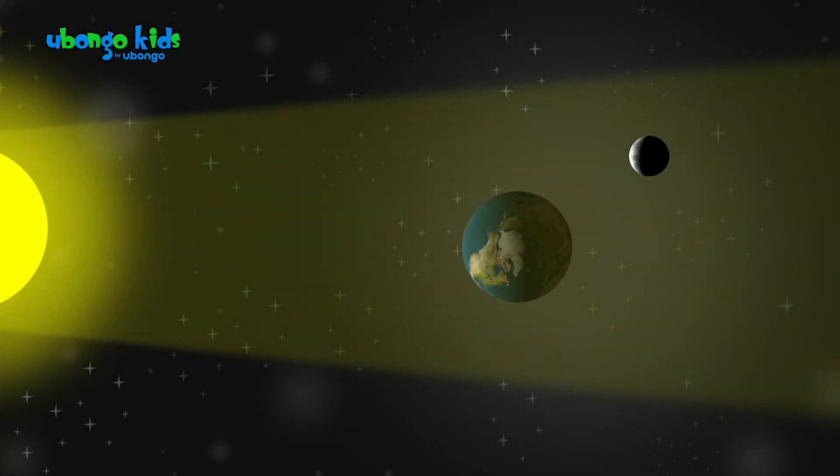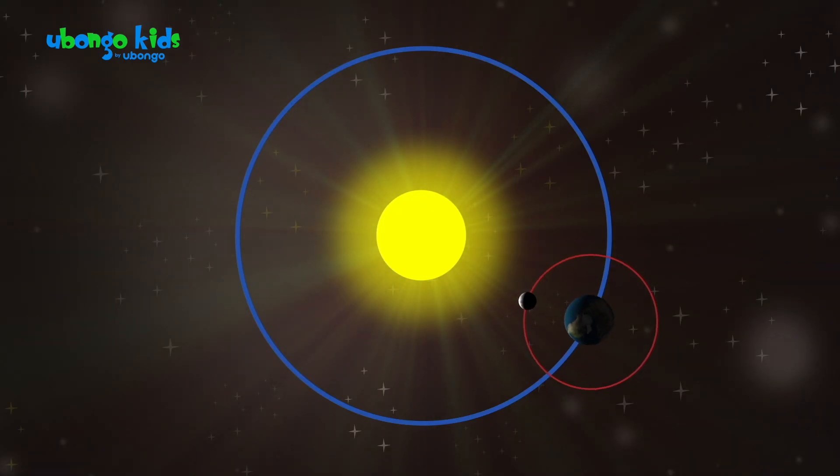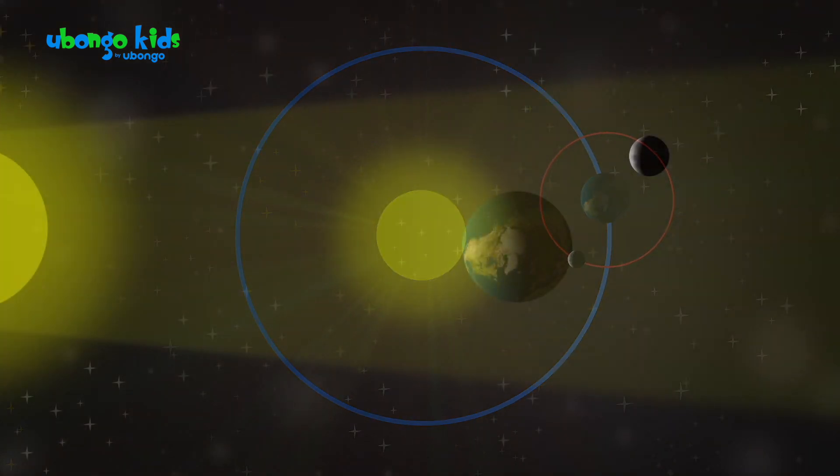Kids, today we're going to learn about the solar system. There are many things which make our solar system unique. Today, we're going to explore how the moon and the earth orbit the sun every single day in our solar system.